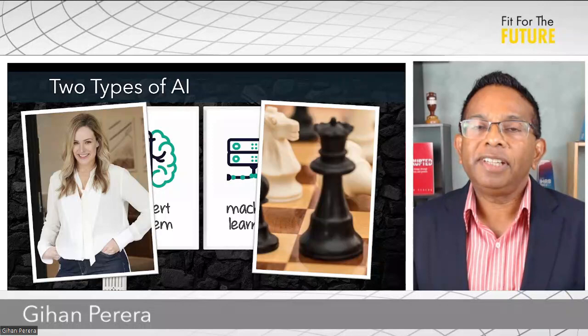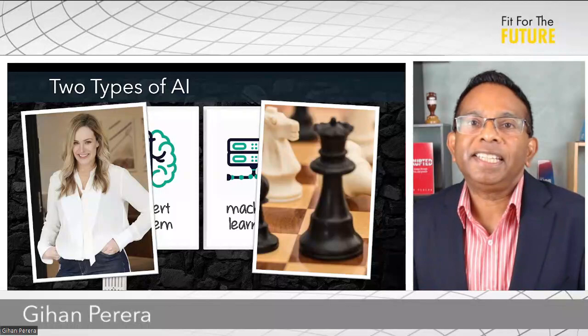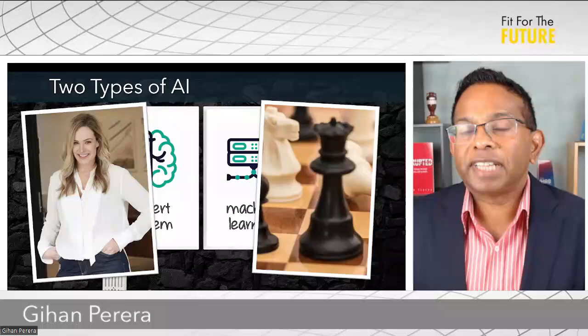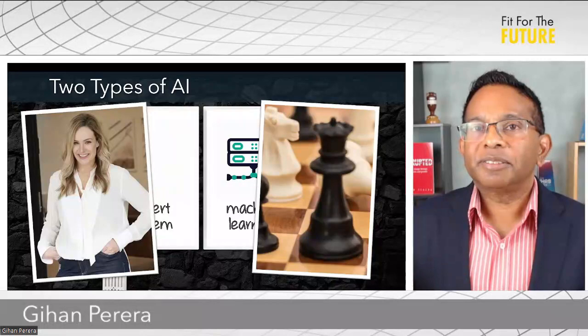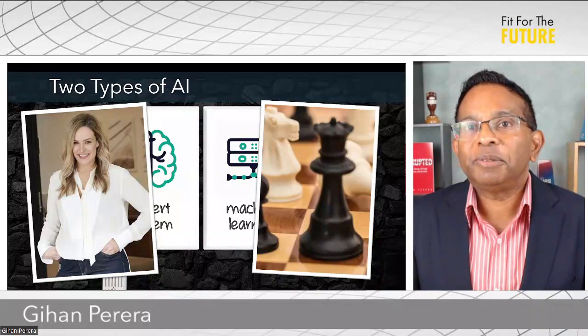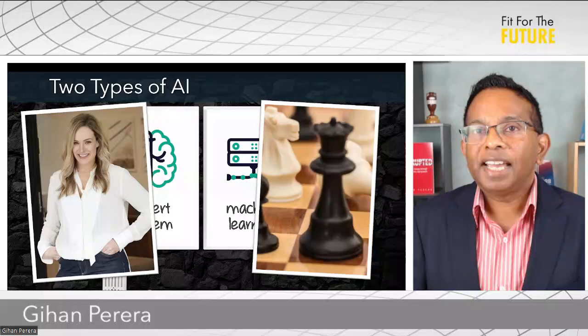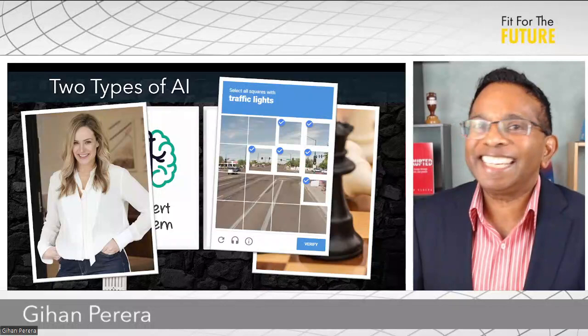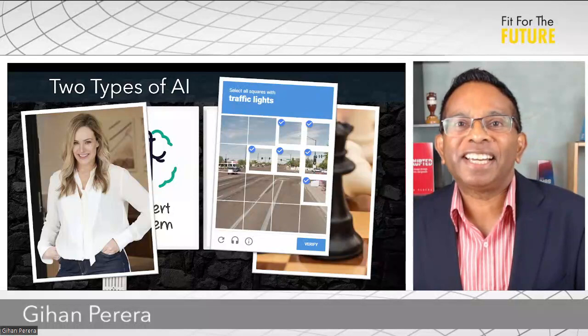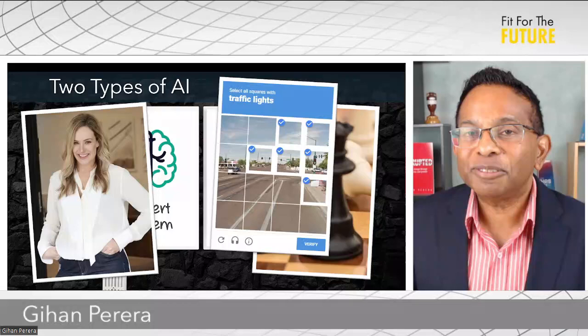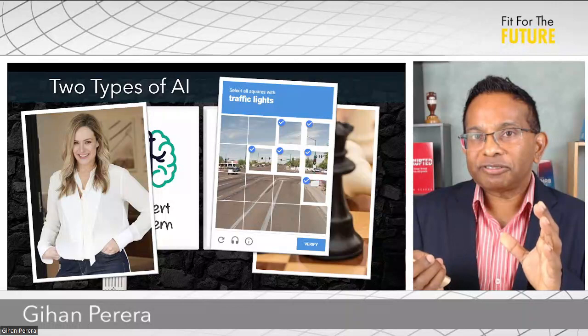That's why when you ask ChatGPT to be a farmer in Tasmania working on precision agriculture, it can give you really good advice. It's not because the owners of ChatGPT have interviewed every expert around the world — they've gathered all this information and the AI has learned which answers are going to be most valuable. And even now we're training AI ourselves: whenever you do one of those CAPTCHAs where you identify traffic lights or bridges or motorcycles, you're helping the software understand what those things look like.